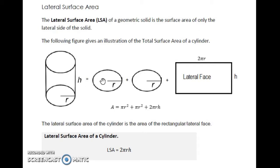The following figure gives an illustration of the total surface area of a cylinder. So the total surface area would be the circular faces plus the lateral face. So we have the area of each circular face plus the area of the lateral face makes up the total surface area.